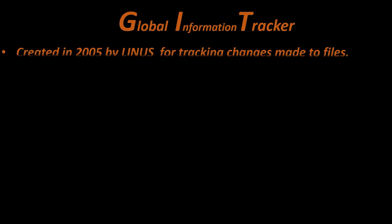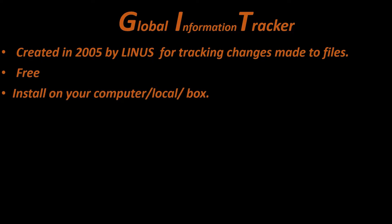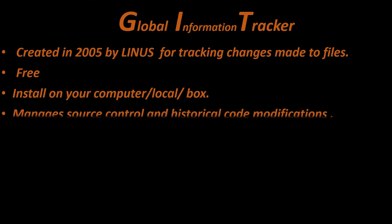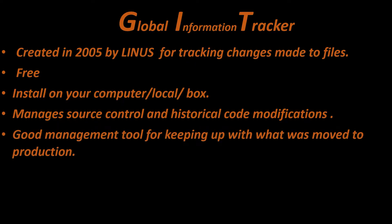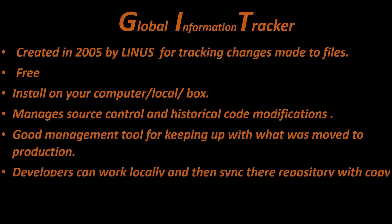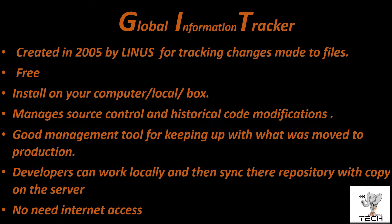Git stands for Global Information Tracker. It was created in 2005 by Linus for tracking changes made to files — that's the key. It's a free piece of software you can install on your computer or local box. It manages source control and historical code modifications, which makes sense. It's a good management tool for keeping up with what you move to production. Developers can use it by downloading it to their local box and syncing it with a repository copy on the server.